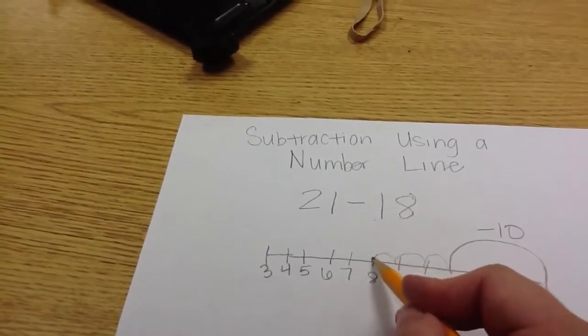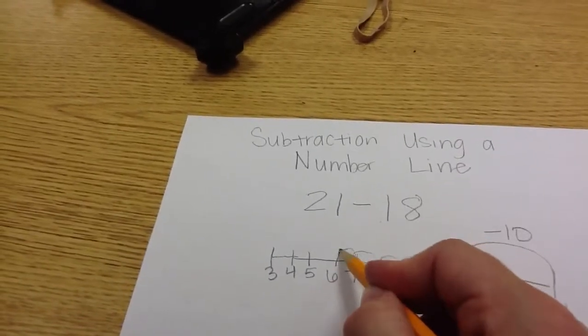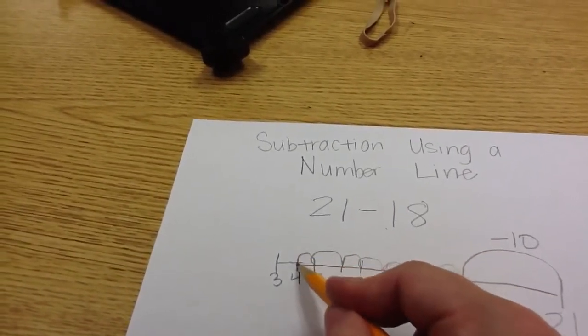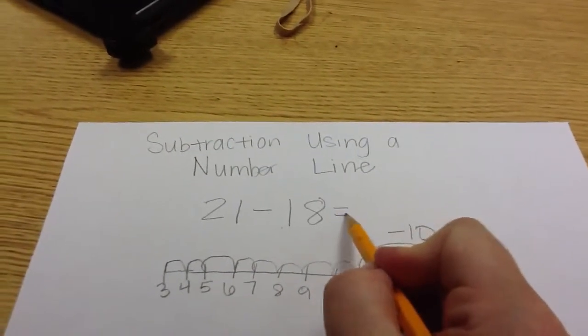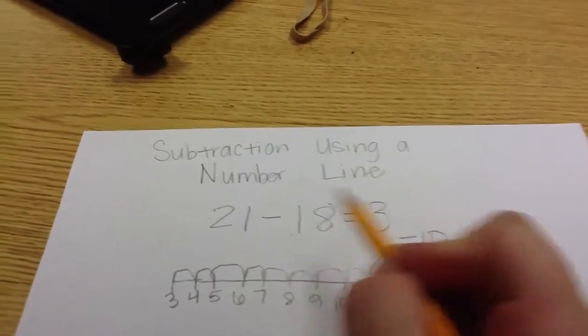1, 2, 3, 4, 5, 6, 7, 8. I moved eight spaces. So, my answer to the problem, 21 minus 18 is 3.